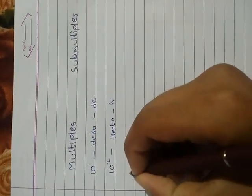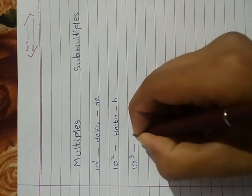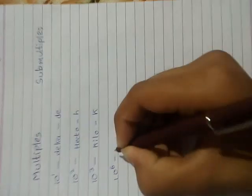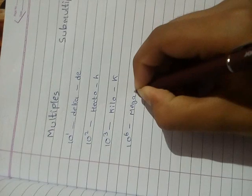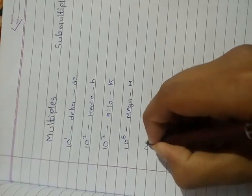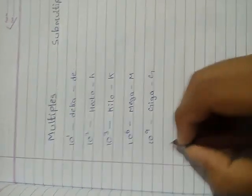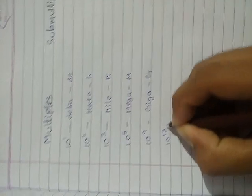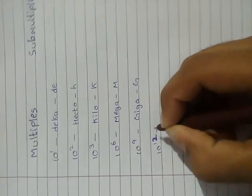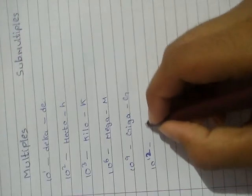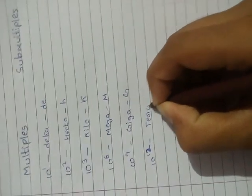10 to the power of 3 is kilo, its symbol is K. 10 to the power of 6 is mega, its symbol is M. 10 to the power of 9 is giga, its symbol is G. 10 to the power of 12 is tera, its symbol is T.